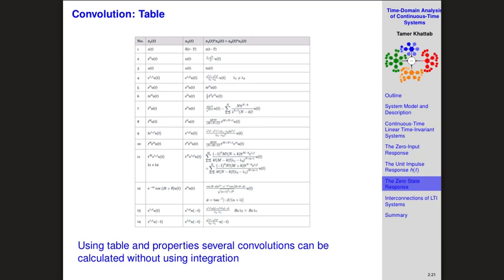This becomes more challenging when one or both functions are piecewise continuous — having a value, then a sudden change to another value, and so on. In that case you cannot consider just two cases like no-overlap and overlap. Within the overlap itself, you may be overlapping with one piece, two pieces, or more, and for each change in value the expression inside the integral changes.